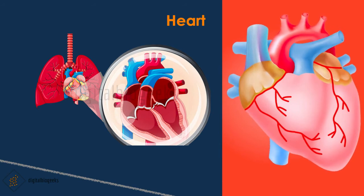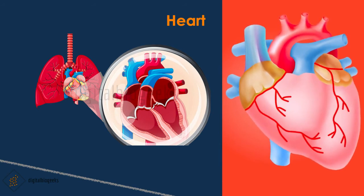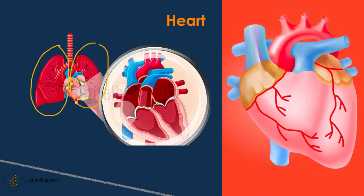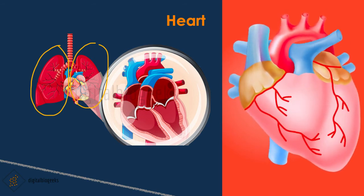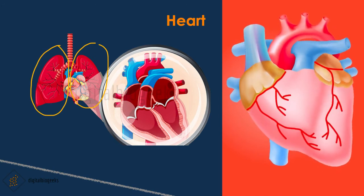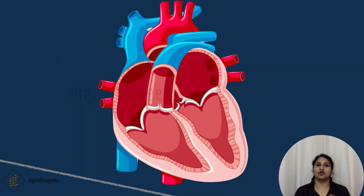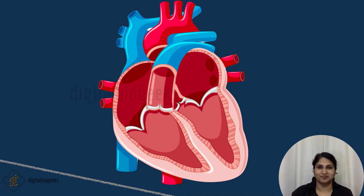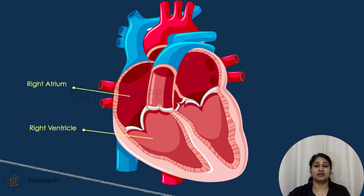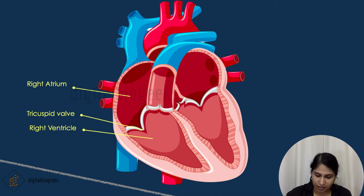The heart is a muscular organ that pumps blood. The human heart is approximately the size of a closed fist, located between the two lungs, with the vertebral column at the back and the sternum and rib cartilage at the front. Its mass is around 250 to 350 grams. The heart has four chambers — two on the right and two on the left. On the right side are the right atrium and right ventricle, separated by the tricuspid valve, which has three cusps and opens in the middle.